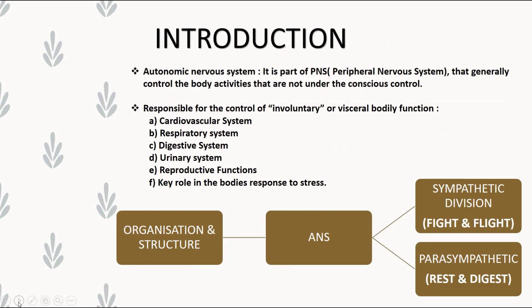In this introduction, the ANS is a part of PNS, that is the peripheral nervous system, that generally controls various body activities that are not under conscious control. This is a highlighting point — it is not under conscious control. It is responsible for the control of involuntary or visceral bodily functions.